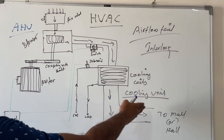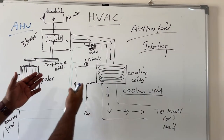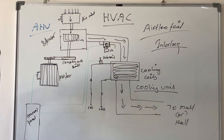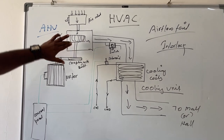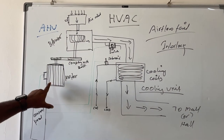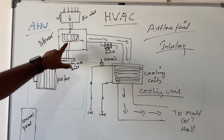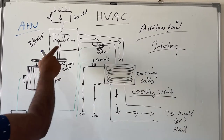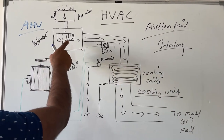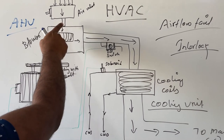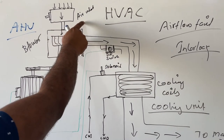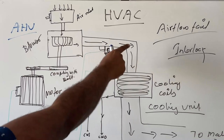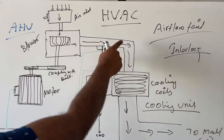The two parts are the blower side and the cooling side. The blower is connected with an electric motor, and the electric motor and the blower are coupled through a belt. This blower is connected with one air inlet where the air will be sucked and it will flow through the duct.